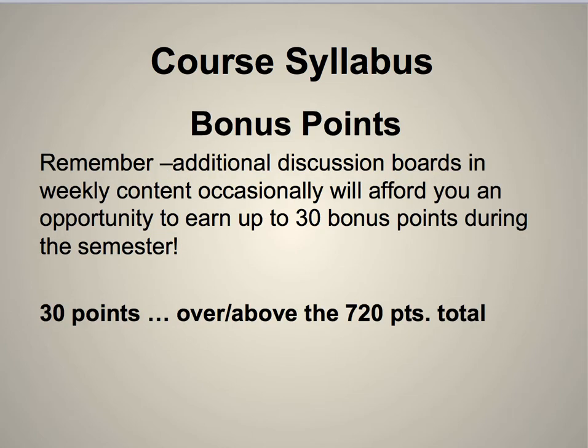For extra credit points, you'll find three additional discussion board questions during the course of the semester — probably not right away, but later on. You can earn up to 30 extra points by doing those extra discussion boards. That's 30 points over and above the 720 total. So if you got all 720 possible points and did three extra discussion boards for full credit — 10 points each — you could have 750 points, which is like 110%. Pretty good.